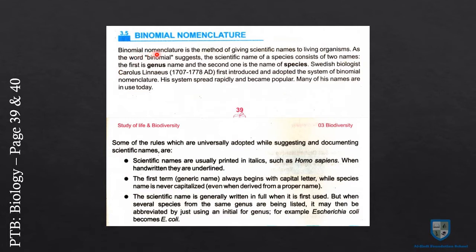Binomial Nomenclature is the method of giving scientific names to living organisms. As the name suggests, the word 'binomial' means the scientific name of a species consists of two names.